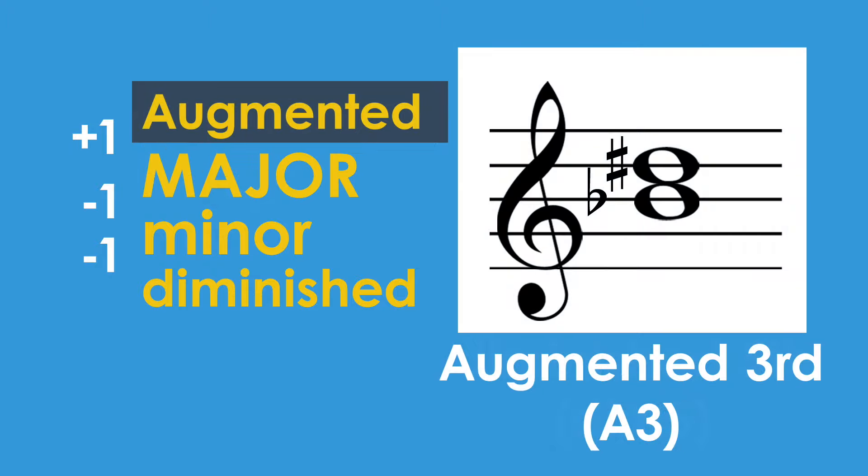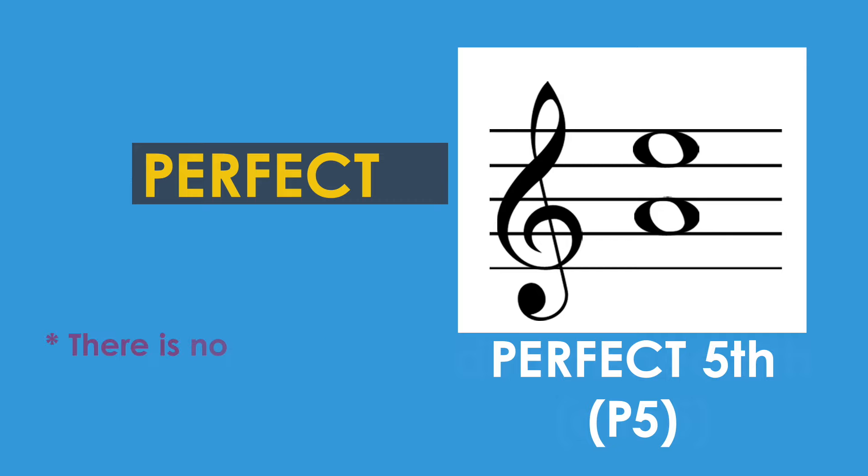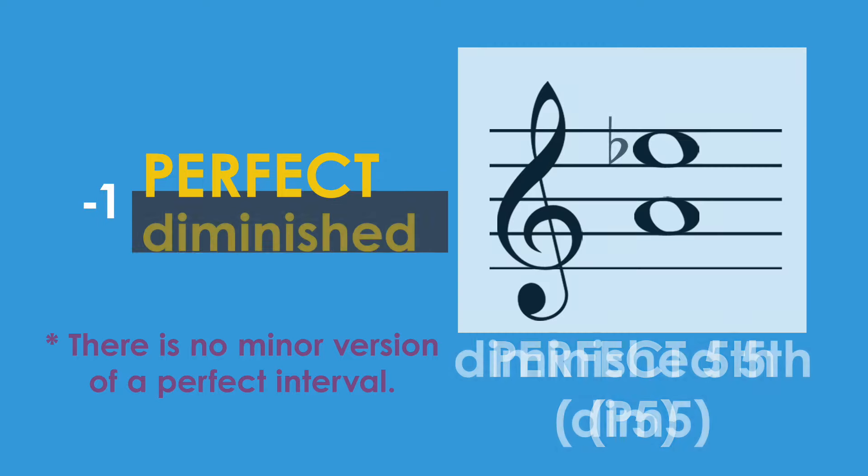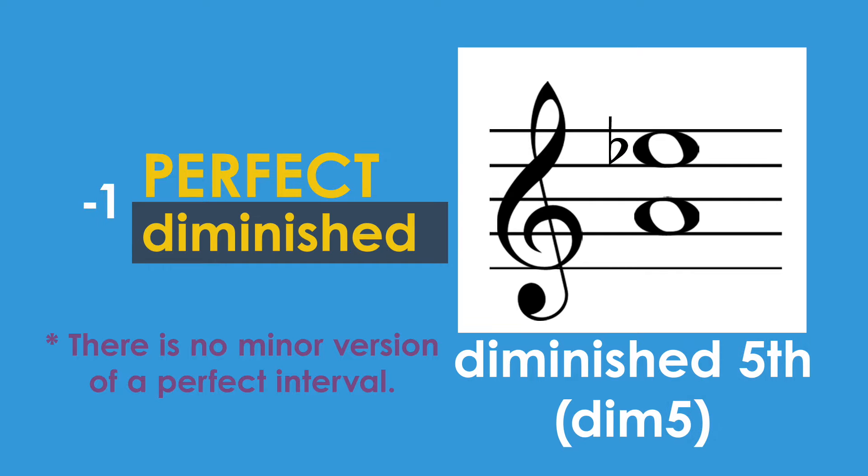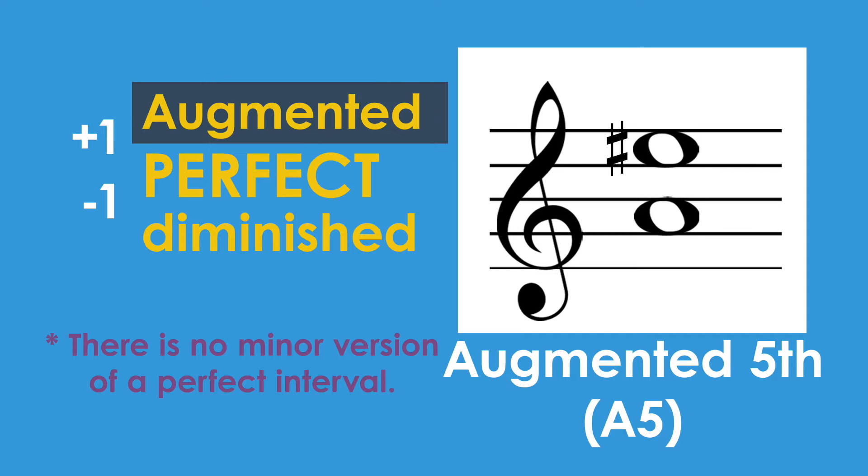For perfect intervals, it's a little different. There is no minor version of a perfect interval. If we make the perfect interval one half step smaller, it becomes diminished. And if we make the perfect interval one half step larger, it becomes augmented.